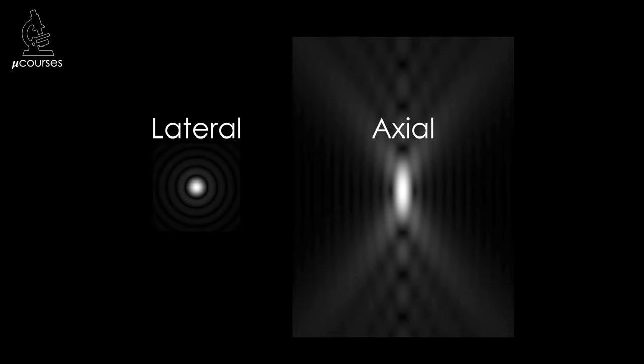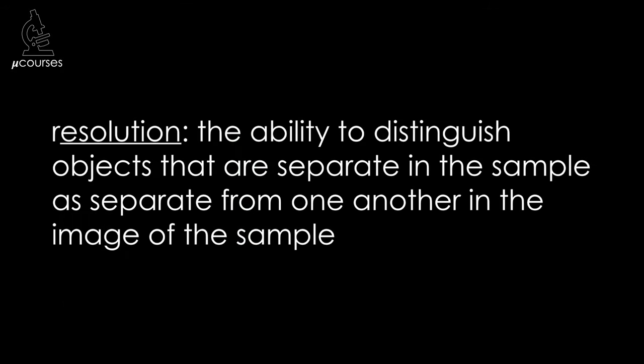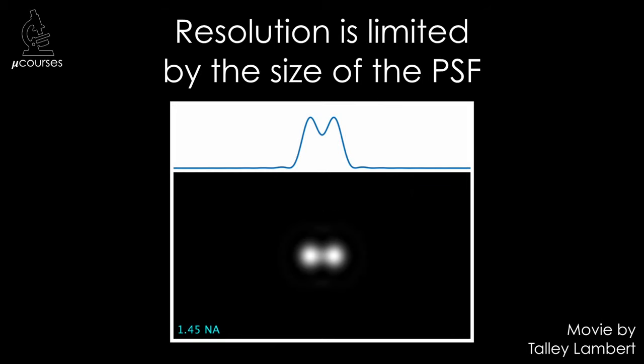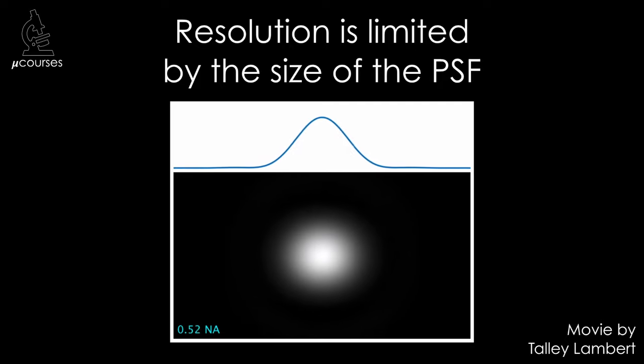When we talk about the size of the point spread function, we're generally referring to the size of the maxima. An image of a small point source of light is going to appear as a point spread function in the image. Small points in your sample are therefore going to have this Gaussian shape of the point spread function maxima. And remember that resolution is defined as the ability to distinguish objects that are separate in the sample as separate in the image. So as the point spread function gets bigger, the Gaussians blur together, and we lose the ability to resolve objects.